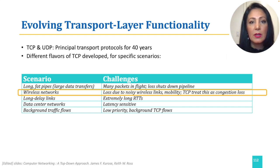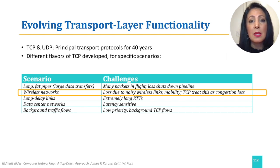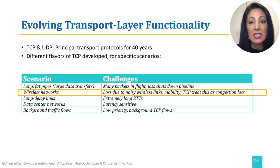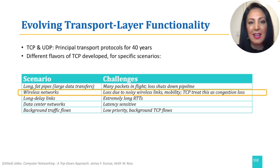Remember, TCP treats loss as a sign of congestion. So TCP sees something that resulted due to wireless channel effects as an indication that there is congestion in the network, and the congestion control behavior starts — which, on the other hand, will affect the rate.